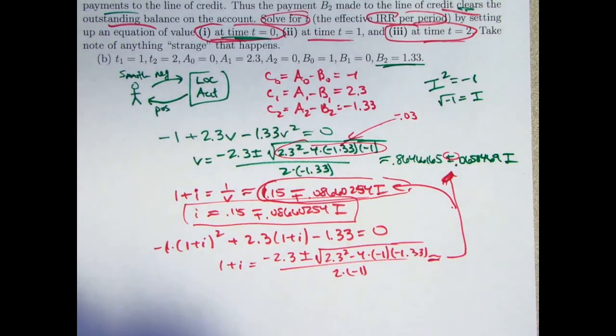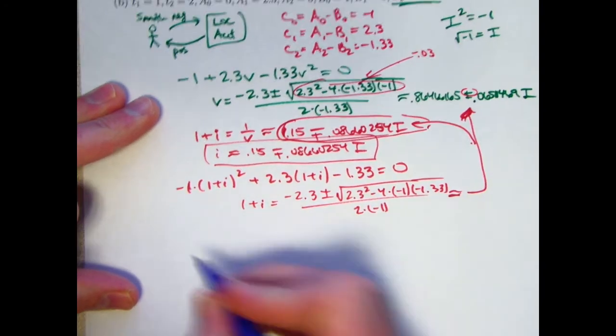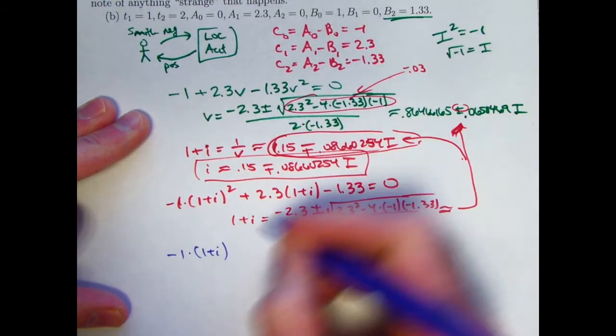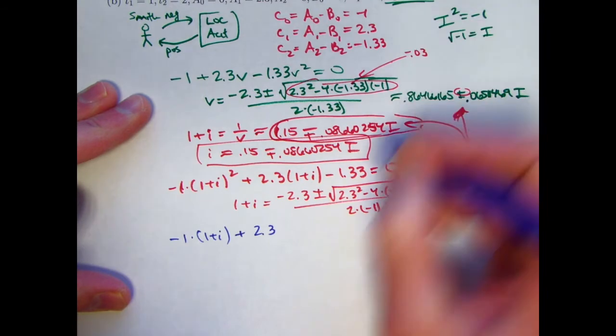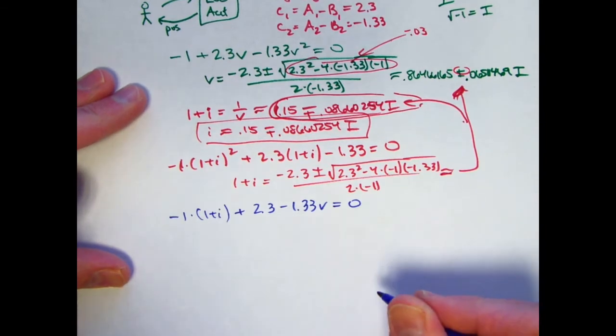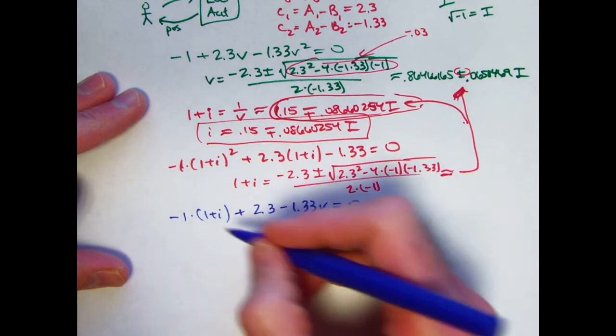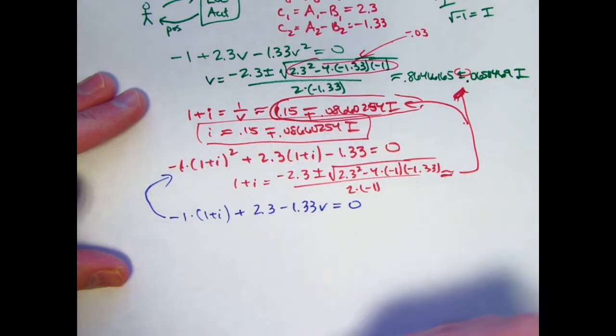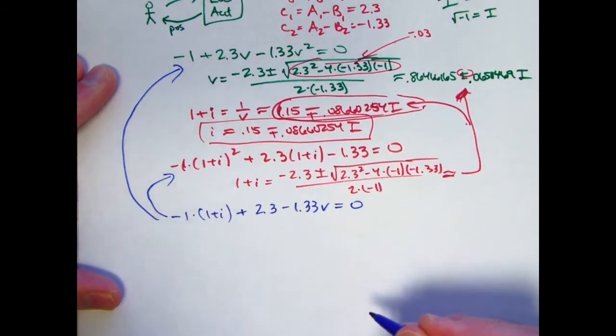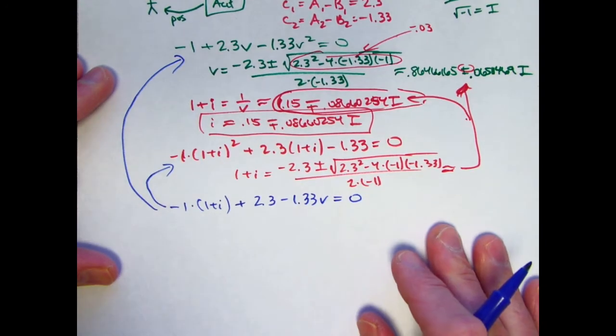Okay, and i, after subtracting 1, would give you this. I guess these are the answers here, by the way. Two internal non-unique rates of return that are both complex numbers. So you get the same answer. If you evaluate at time 1, the negative 1 needs to go forward by 1 unit of time. It's got to get multiplied by 1 plus i. The 2.3 is already at time 1. It stays as is. And the negative 1.33 needs to go back in time by 1 unit of time. So it gets multiplied by v. But if you're going to solve this equation for i or v, you need to convert it to one of these other two before using the quadratic formula. You can convert it to this one by multiplying everything by 1 plus i. You could convert it to this one by multiplying everything by v, which is the reciprocal of 1 plus i. All right, and you get the same thing.